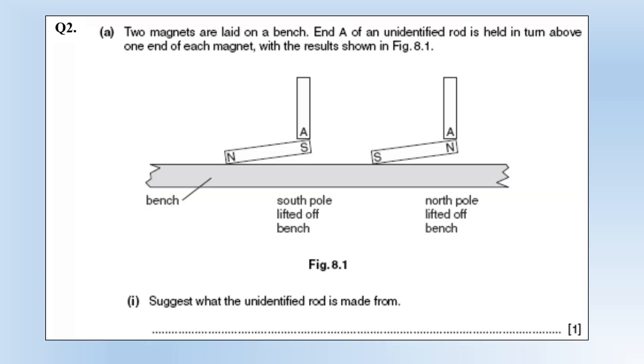So two magnets are laid on a bench. End A of an unidentified rod is held above each end in turn with the results shown. So you can see it's attracted to both ends of the magnet. Guess what the unidentified rod is made from? Well it's got to be iron or some other soft magnetic material. The key is it can't be a magnet because it's attracted to both ends. It must be something that can become a magnet in the presence of a magnetic field or soft magnetic material.